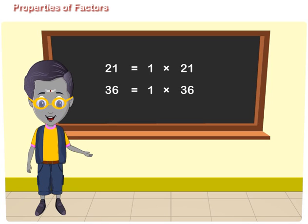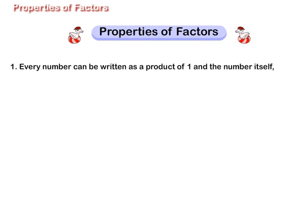Properties of Factors. Property 1: Every number can be written as a product of 1 and the number itself.